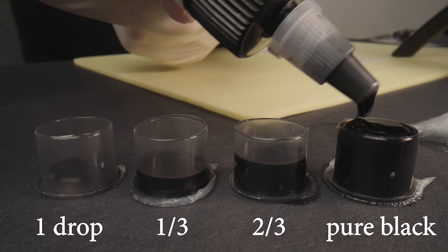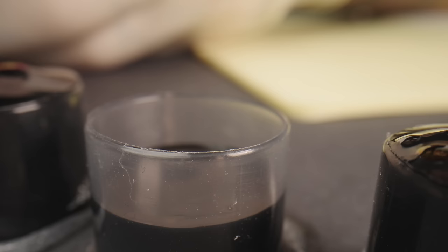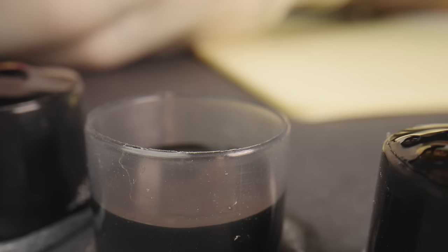To create different shades of grey, use four ink caps and fill them with varying amounts of ink to achieve a nice gradient. You can also use sterile water instead of shading solutions, as it works just as well and is more cost effective.